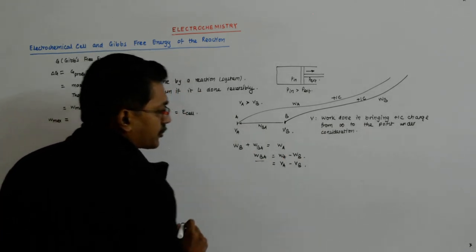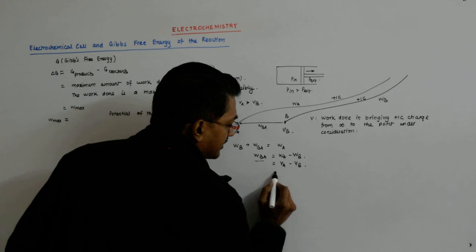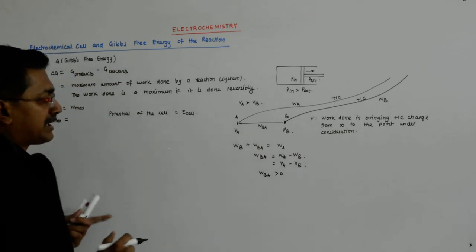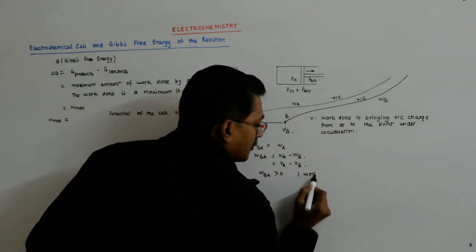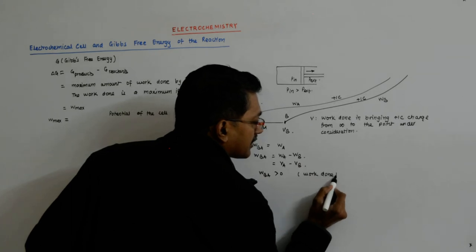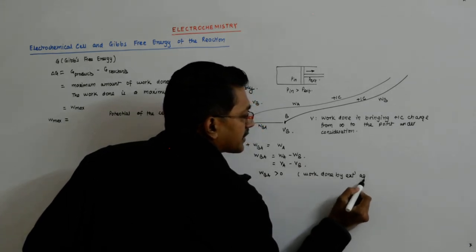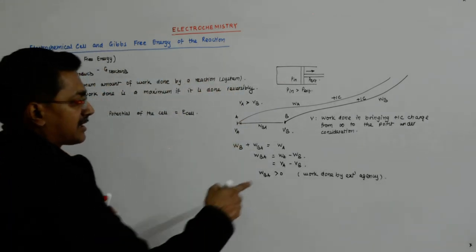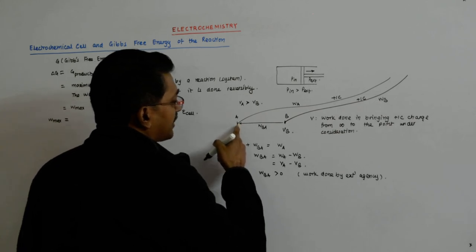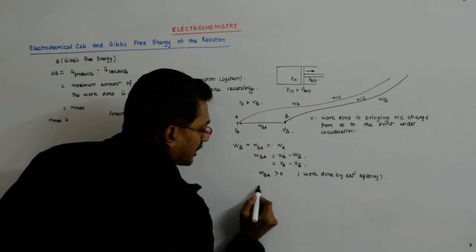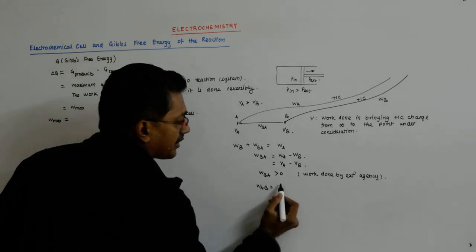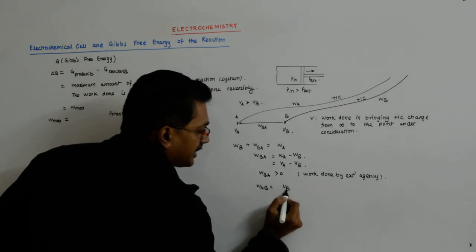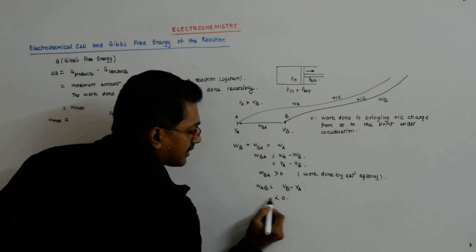So the external agency has to do work. If W-B-A is greater than positive, it means the work is being done by the external agency. If the work is done by the system, then it will become negative. W-A-B will be V-B minus V-A, which is less than zero.